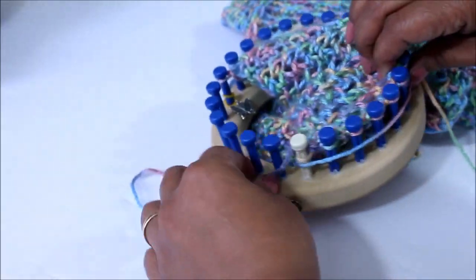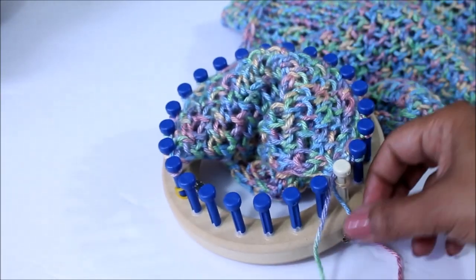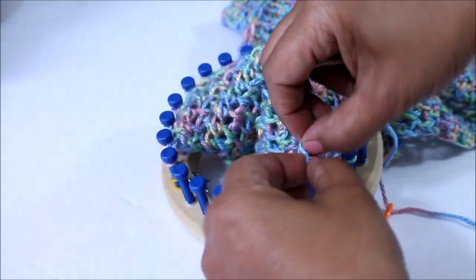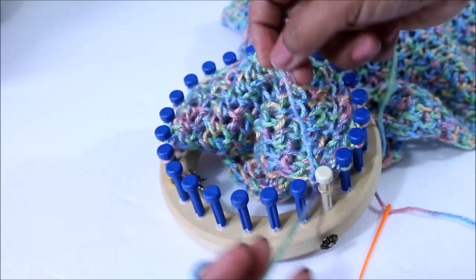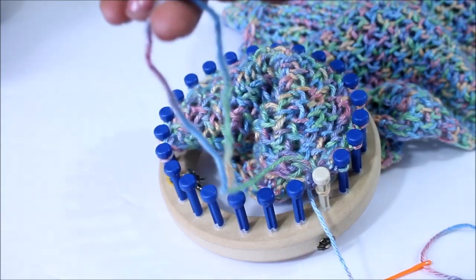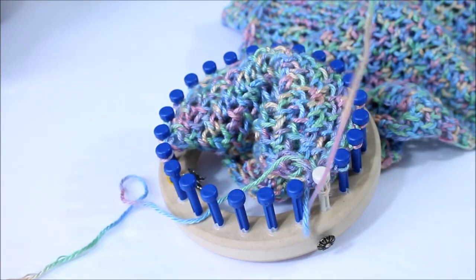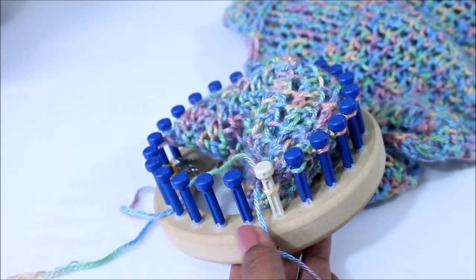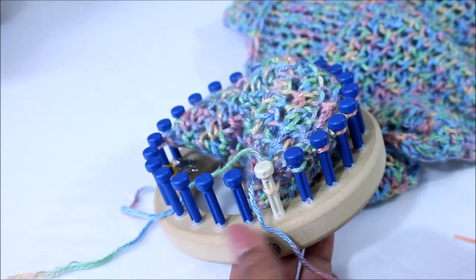All right, go back to the front of the loom to where peg one is, find the other strand of yarn which was your cast on. So with your cast on and your working yarn, you're going to make two knots to kind of secure things and then you're going to get your needle and we're going to start the process of the cast off.